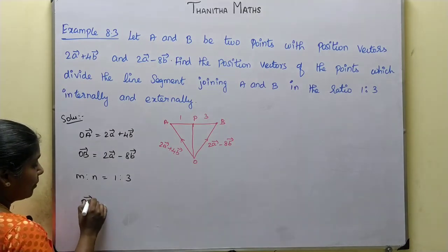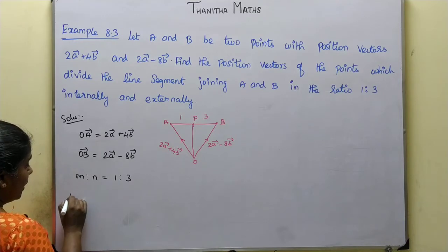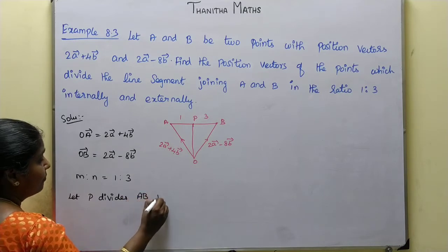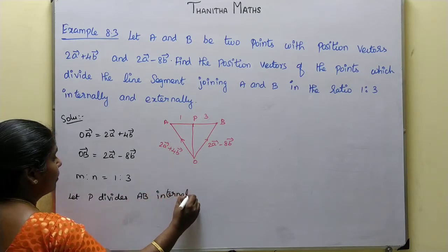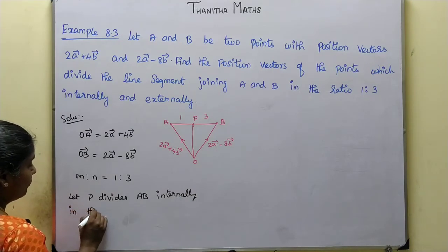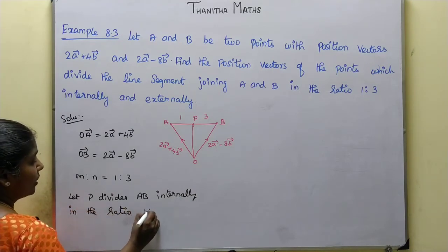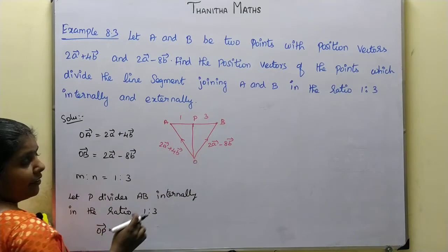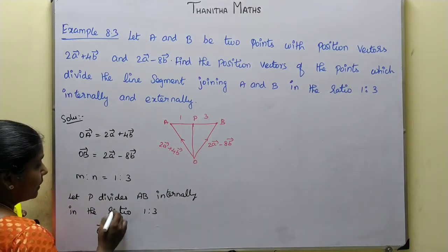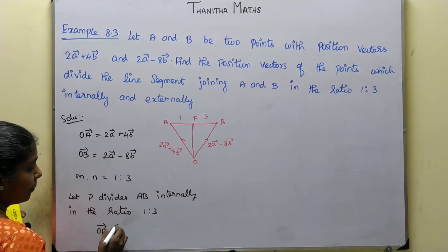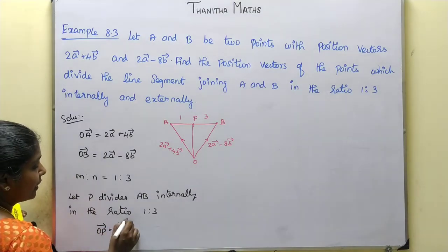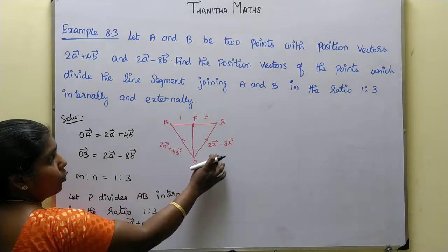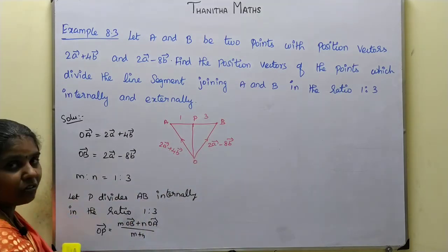Now let P divide AB internally in the ratio 1 is to 3. The internal division formula is: OP vector equals m into OB vector plus n into OA vector, divided by m plus n. Here m is 1 and n is 3.